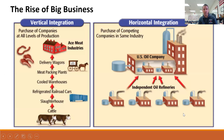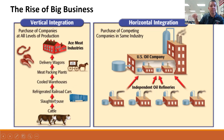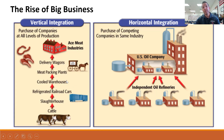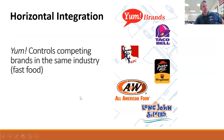Here are some other examples. These diagrams may be clearer — this is a monopoly or horizontal integration where one oil company owns all of the refineries in an area and can charge whatever they like. This other diagram shows vertical integration where a farmer, for example, would own the delivery wagons, meatpacking plants, cooled warehouses, refrigerated railroad cars, the slaughterhouse, and the cattle — owning every part of the process from the start of cattle production to when it gets to the meat market. It's close to a type of horizontal integration or monopoly with the Yum! Brands fast food chains.